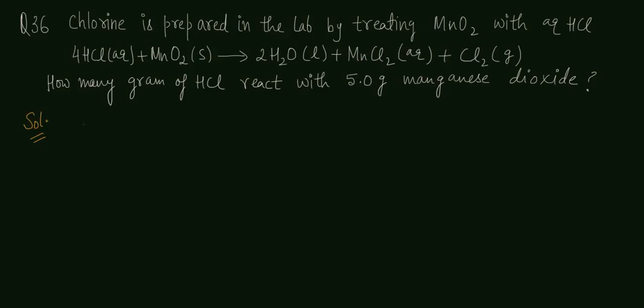Problem 36. Chlorine is prepared in the lab by treating MnO2 with aqueous HCl according to the equation: 4HCl plus MnO2 gives 2H2O plus MnCl2 plus Cl2. How many grams of HCl react with 5 grams of manganese dioxide?